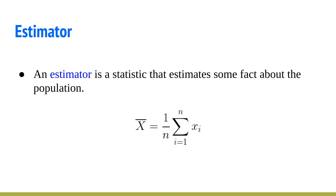An estimator in general is some sort of statistic that, as is obvious from its name, you want to estimate some facts about the population. For example, you want to measure the mean height of the students of a school. The number of students might be a thousand, so it's impractical to take all of them and measure their heights, so we take a sample of around 30 or 40.